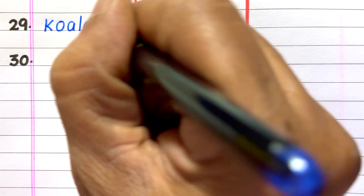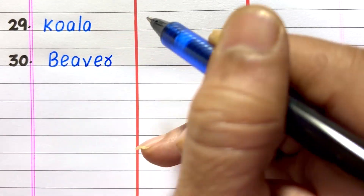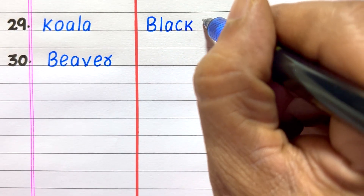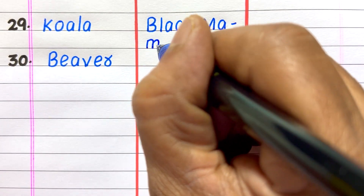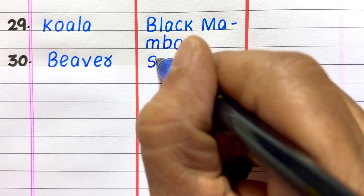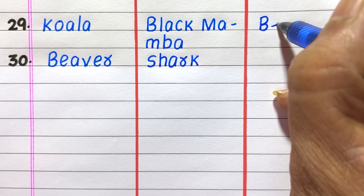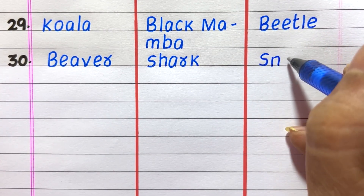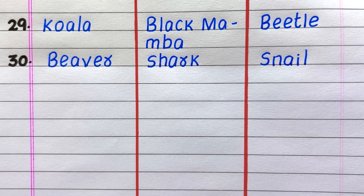Twenty-ninth example of a herbivore is koala, and the last one, thirtieth, is beaver. Twenty-ninth example of a carnivore is black mamba, and the last one, thirtieth, is shark. Twenty-ninth example of an omnivore is beetle, and the last one, thirtieth, is snail.